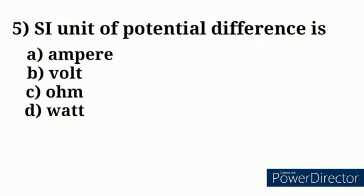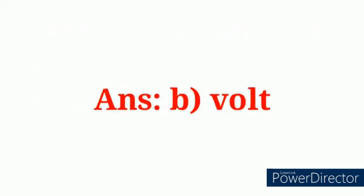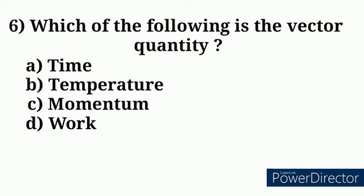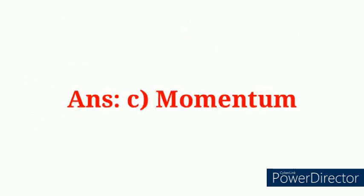Question number 5: SI unit of potential difference is? Answer option B: volt. Question number 6: Which of the following is a vector quantity? Answer option C: momentum.